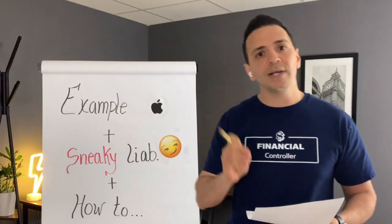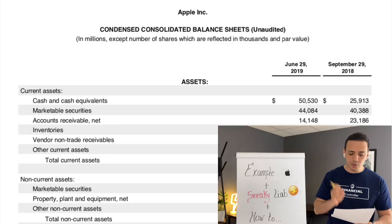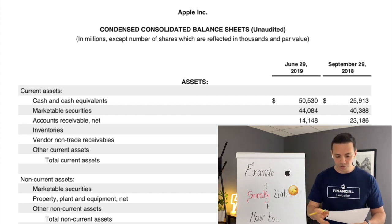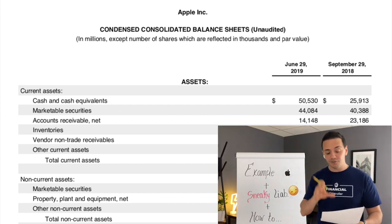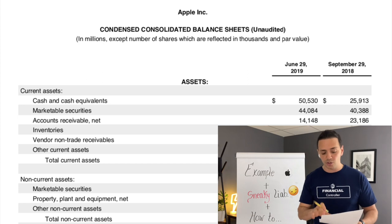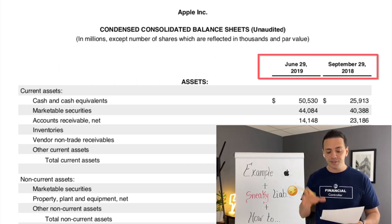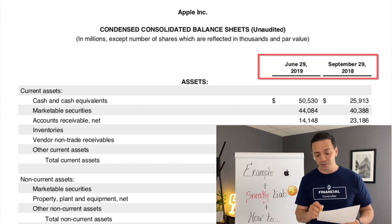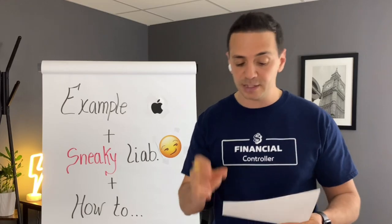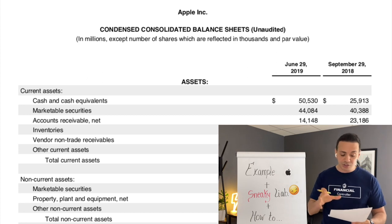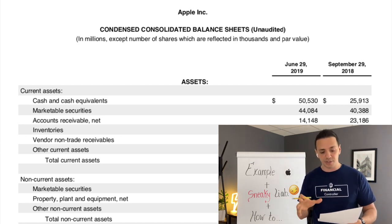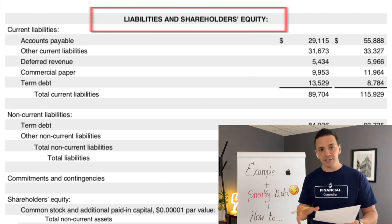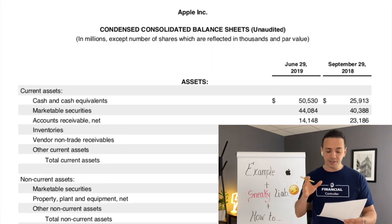Now let's take a look at Apple's balance sheet as a really good example of the different components and mechanics of a balance sheet. When we look at a balance sheet, the first thing we should look at is the date. This balance sheet is comparing two periods: the period ending June 29th, 2019 to the period ending September 29th, 2018. The balance sheet is broken into two major sections: assets on one side, and liabilities and shareholders' equity on the other side.